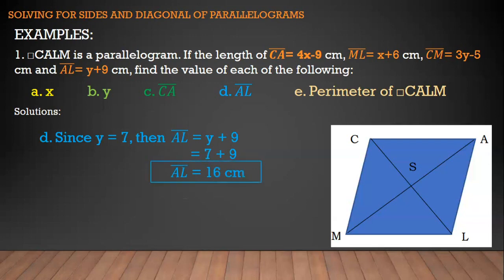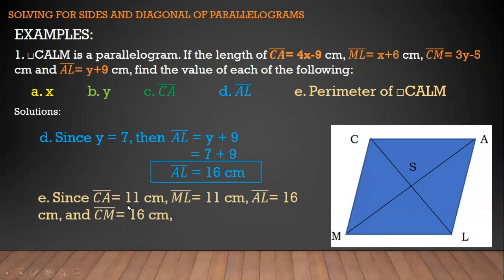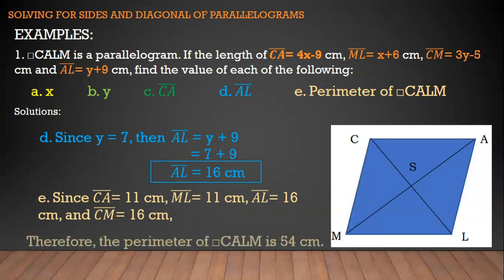Let's find the perimeter of parallelogram CALM. To find the perimeter, we add the values of all sides. Since segment CA is 11 cm, and it is congruent to segment ML, segment ML is also 11 cm. Segment AL is 16 cm, and since it is congruent to segment CM, segment CM is also 16 cm. Adding all sides: 11 plus 11 plus 16 plus 16 equals 54 cm. So the perimeter of parallelogram CALM is 54 cm.